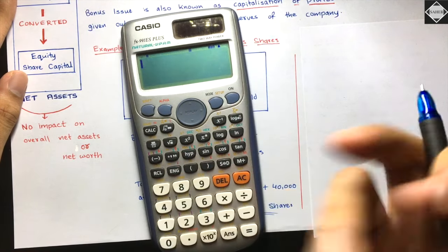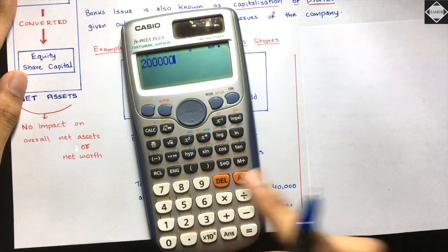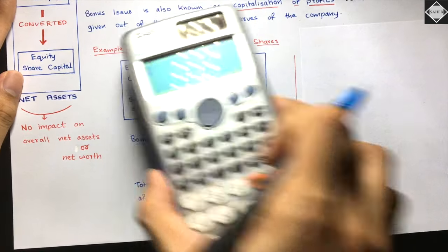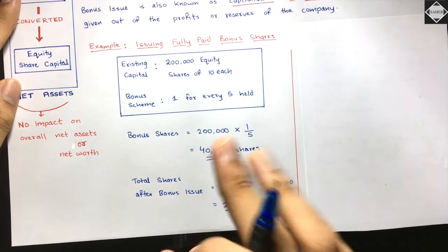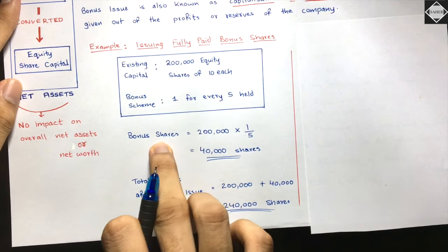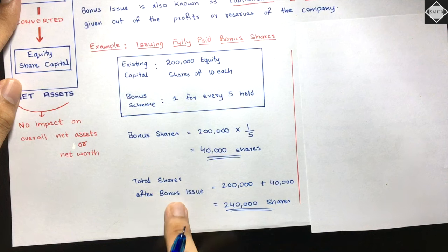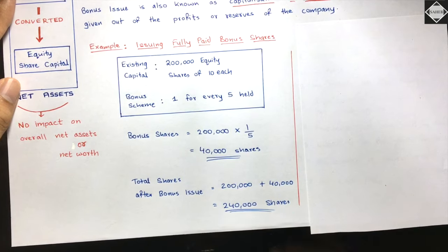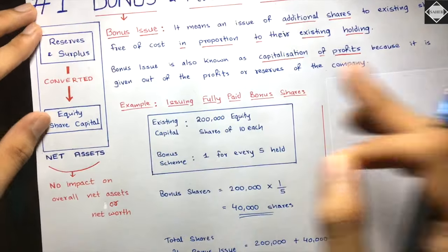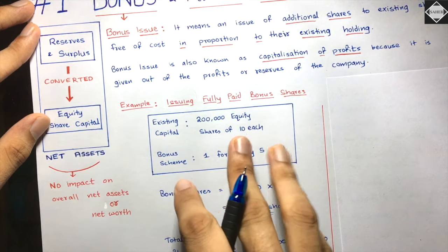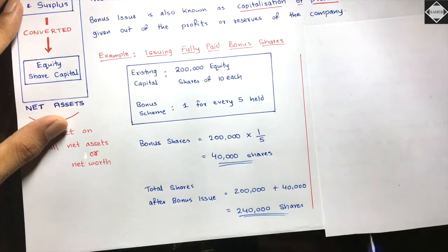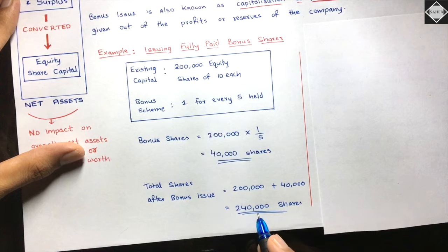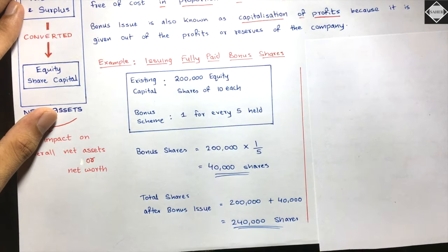You can also calculate using percentage: 2 lakh × 20% = 40,000 bonus shares. After the bonus issue, total shares = 2 lakh existing + 40,000 bonus = 2 lakh 40,000 shares. Because of the bonus issue, money from reserves and surplus has been converted into equity share capital and the number of shares has increased.